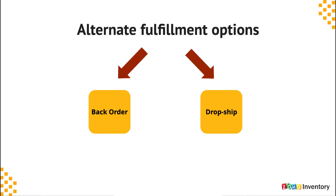With that, we have covered the regular methods of order fulfillment. Now let us see how we can fulfill a similar order under a low stock or stock-out situation. To do that, we are going to apply two methods: back-ordering and drop shipment.